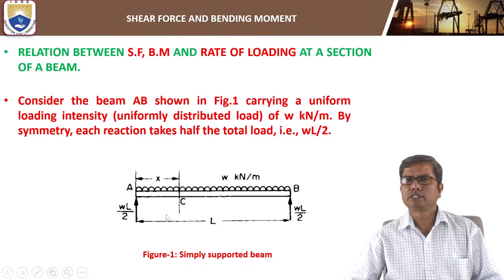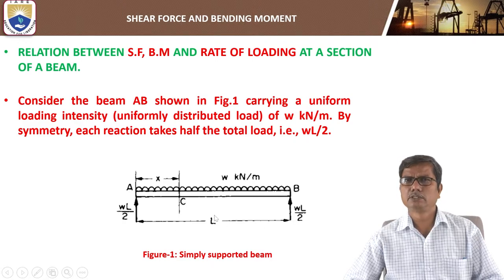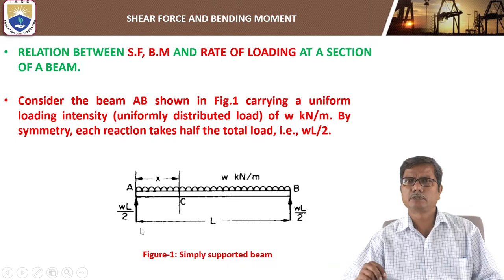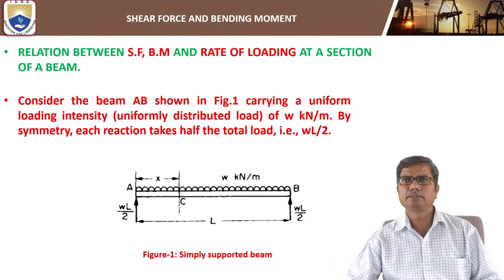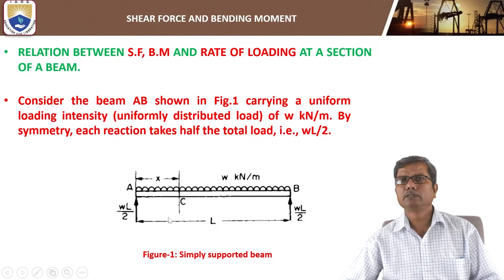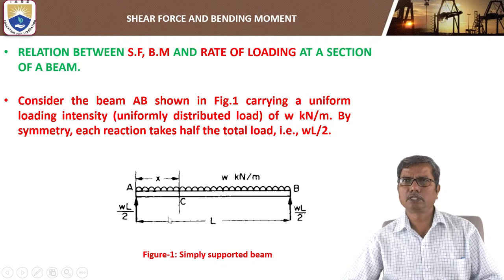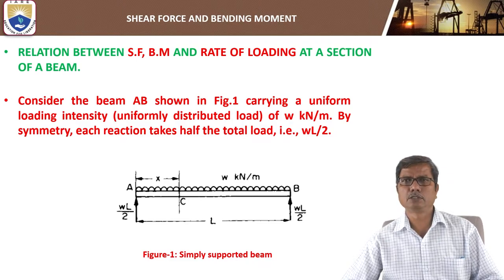Consider this simply supported beam with the loading. The support reactions at A and B will be WL by 2 each, because of symmetry. Both are equal and equal to half of the total loading, WL by 2.